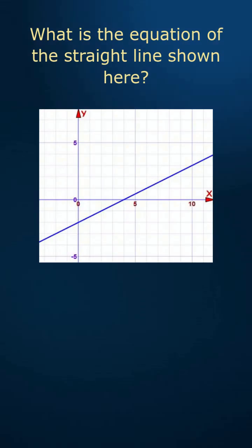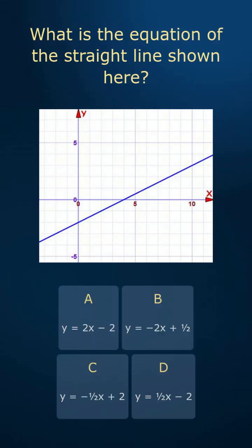What is the equation of the straight line shown here? A, B, C, or D?